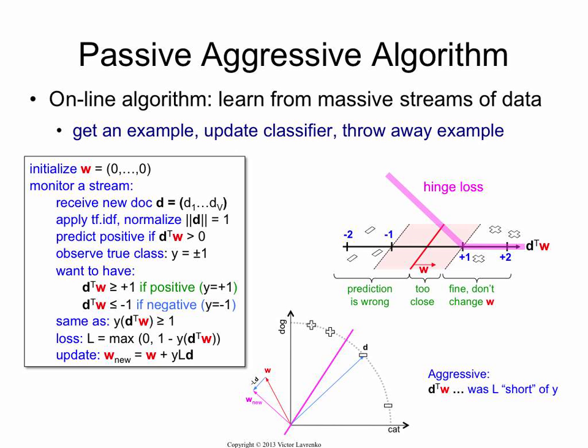So assume that the document was positive. It should have scored over, it should have gotten a plus one or higher, and it's gotten some number that's smaller than that. And L is the difference between what it should have gotten and what it did get. So L, the loss, is how short it fell off the target.